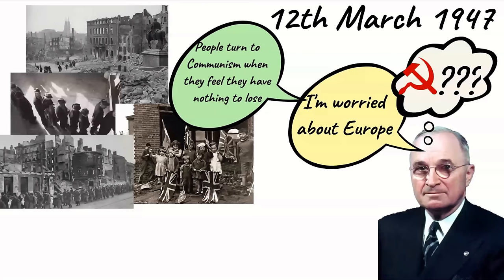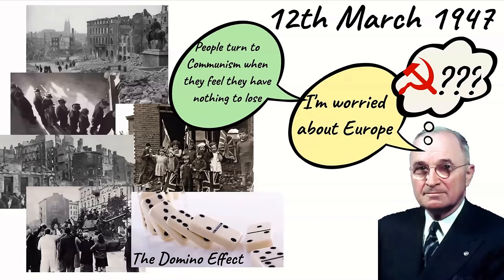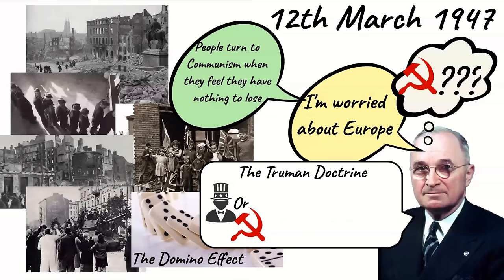Additionally, many Eastern European countries had been liberated from Nazi control by the USSR and some, including Poland, had already been forced to take a communist government. Truman was worried that this would spread. This theory was called the domino effect — the idea that when one nation fell to communism, others would follow.